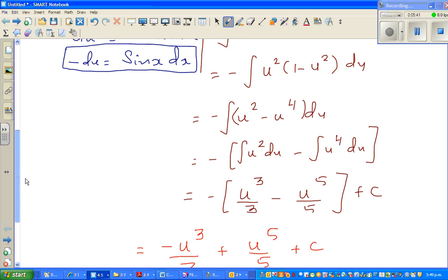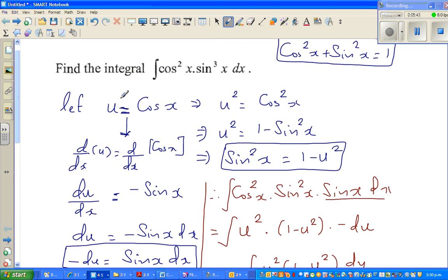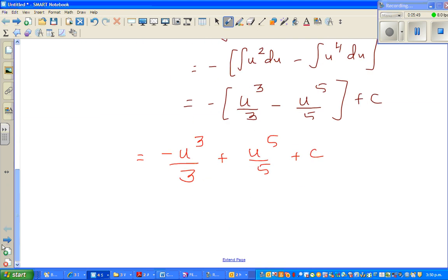But we have to get back to the original form. Our original form was in x. So u equals cos x, we have to put that back. So this is nothing but minus cos cubed x over 3 plus cos to the power 5 x over 5 plus c. Just like that.